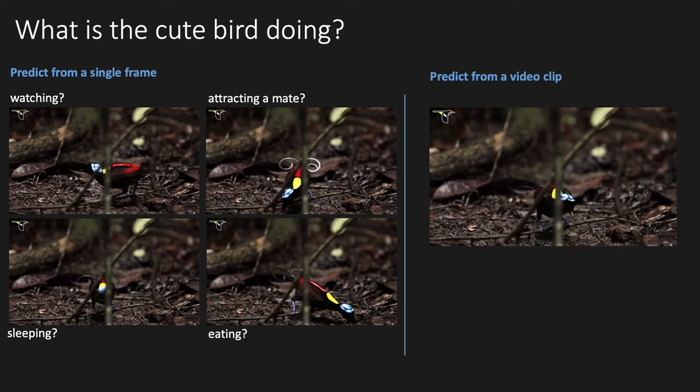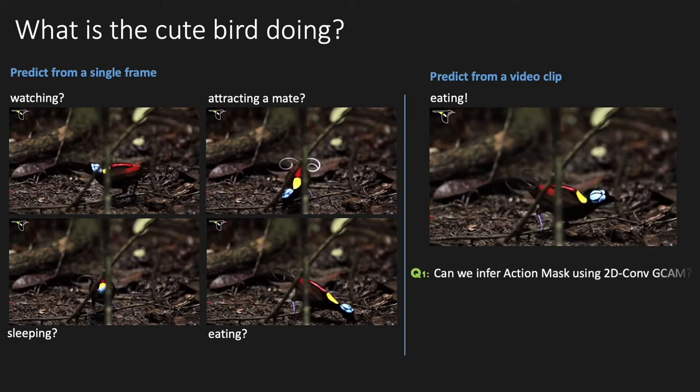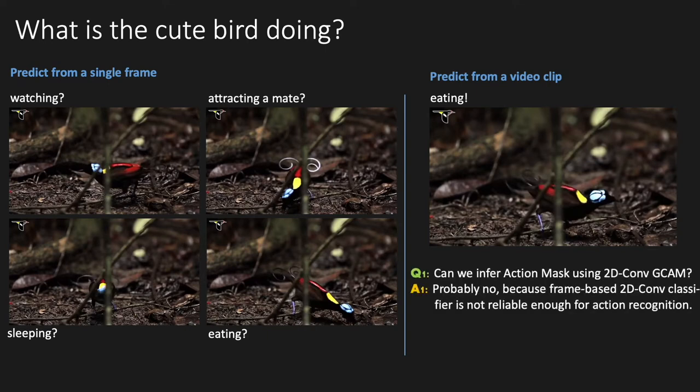Then what if a video clip is provided? It must be eating — pretty clear, right? Since an accurate action mask highly depends on a well-trained action classifier that is robust in action recognition, we can hardly infer an accurate action mask using 2D Comb GCN because it is based on a 2D action classifier which is not reliable enough. The spatial-temporal dynamics are lost when the action classifier operates on a single frame.